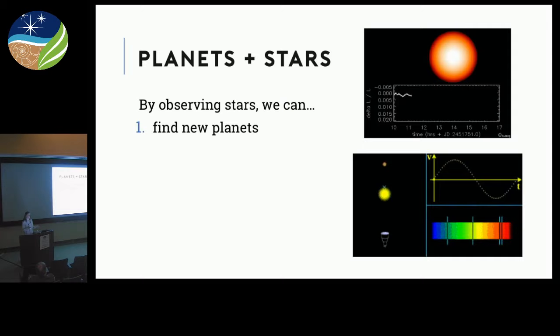We can observe stars to find new planets. These static images represent the most efficient, most productive ways of finding planets to date, which are the transit method, where we observe the brightness of a star for a long period of time and see it periodically dimming as the planet passes in front of it, and the radial velocity method, where we measure the velocity of the star along the line of sight.